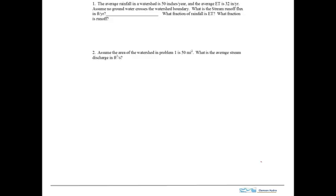Problem number two: assume the area of the watershed is 50 square miles. What is the average stream discharge in cubic feet per second? We're after a volumetric flow, and we're given a flux and an area, so we just need to multiply those two together and convert.